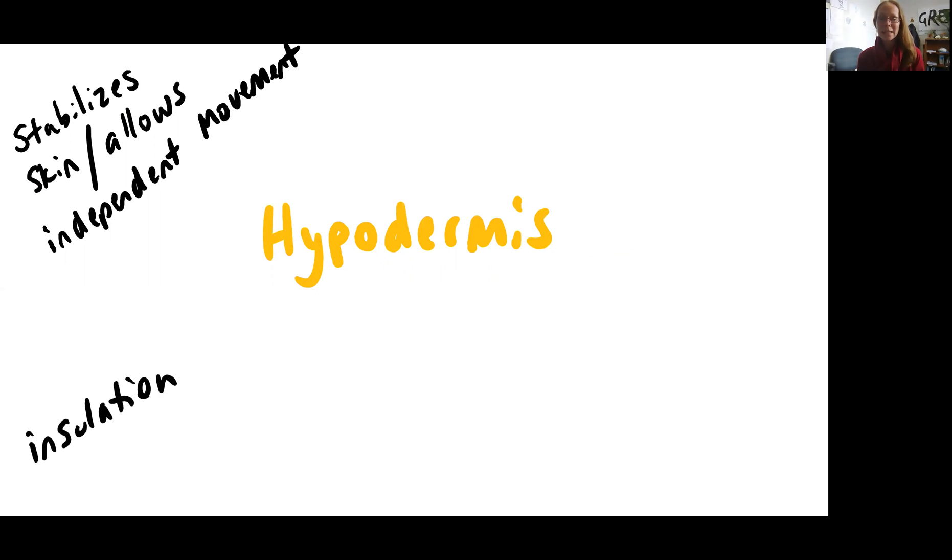It's an insulation layer. So this adipose tissue is helping to thermoregulate the body. It's helping to keep us warm.